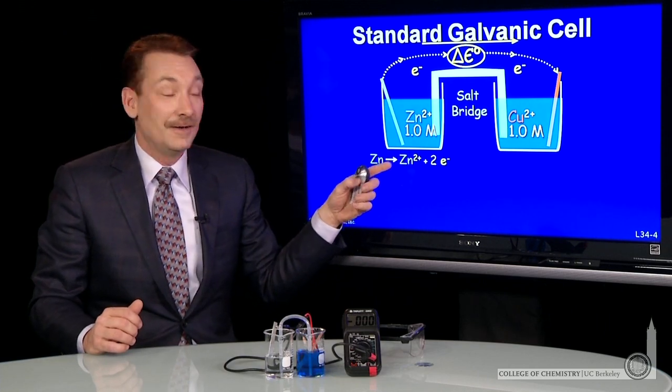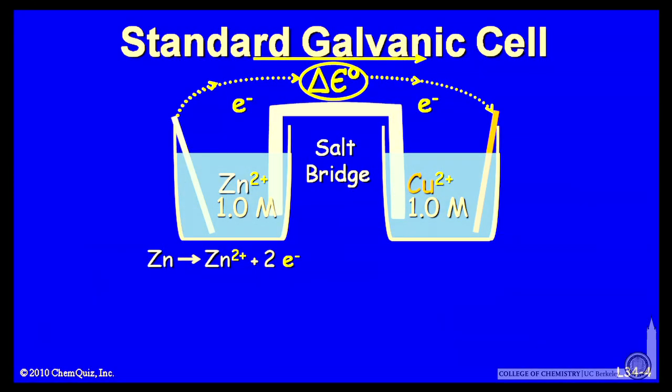In this beaker, what happens is zinc metal is oxidized to zinc ions, giving up two electrons. So an oxidation occurs here, and oxidation is associated with the anode of a two-cell reaction.